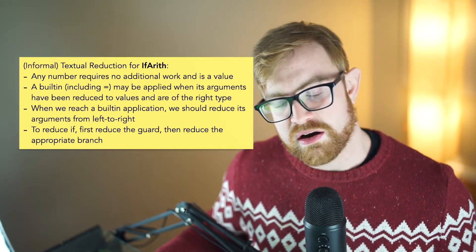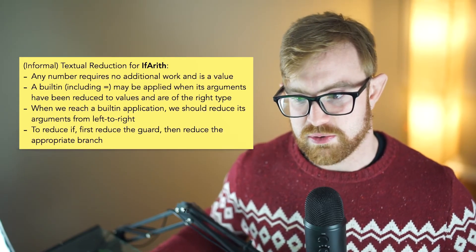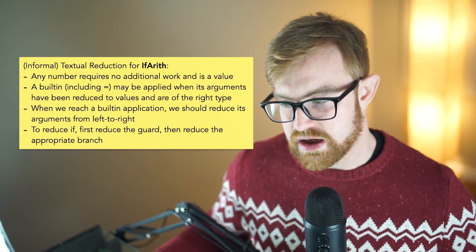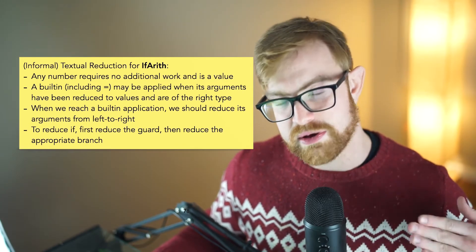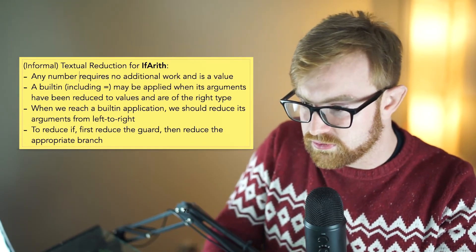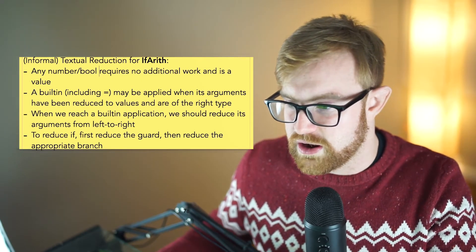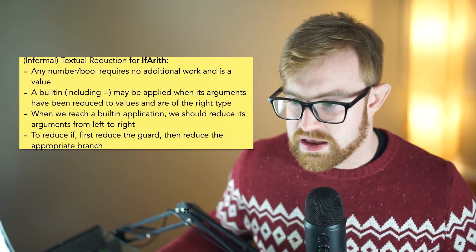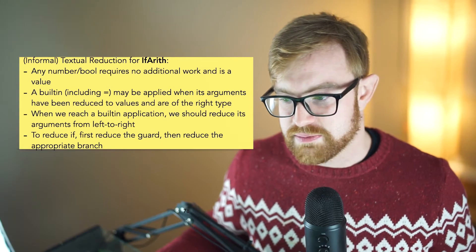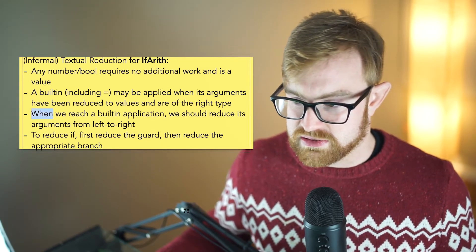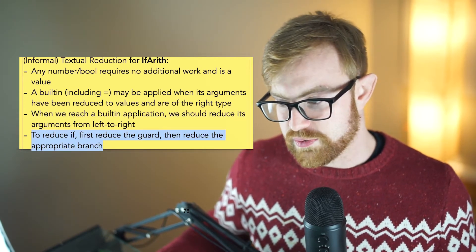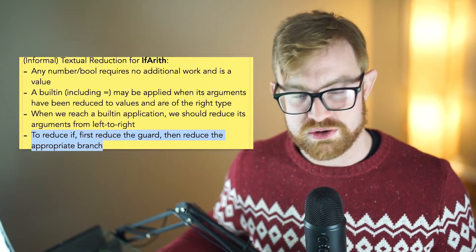And so here are the actual final rules for ifarith — this language I showed earlier. The rules basically say any number or boolean requires no additional work and just is a value. Any built-in, including equals, may be applied when its arguments have been reduced to values and are of the right type. When we reach a built-in application, we should reduce its arguments from left to right. And to reduce an if, first we reduce the guard and then we reduce the appropriate branch.